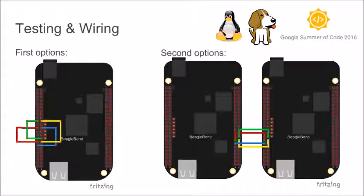For testing, I'm planning to use one or two boards at the same time. One AM335X processor contains two MCSPI controllers, which allows using one controller as a slave and the other as a master. The other option is to use two boards where one works as a master and the other as a slave. I'm going to try both options.